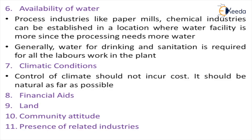The seventh factor is climatic conditions. The control of climate should not be required at any cost — it should be natural as far as possible. The industry should be established in a normal climatic condition. For example, if an oil storage industry is established in a very hot place, there is a risk of fire and accidents. To avoid this, the industry tries to maintain normal climatic conditions, which adds cost. So natural climate should be utilized as far as possible.